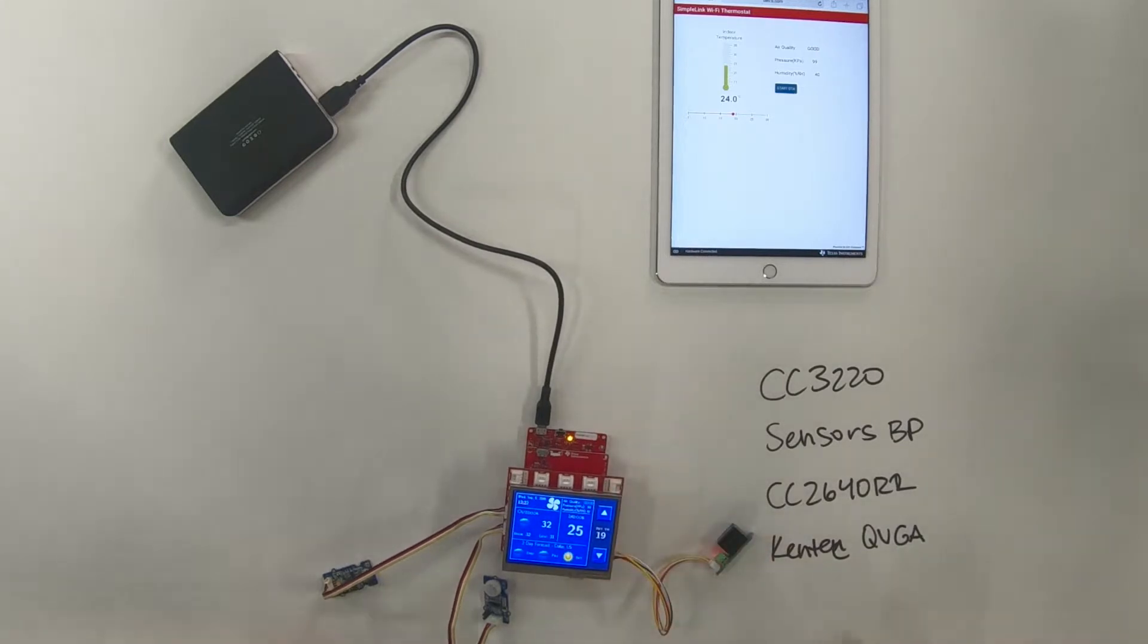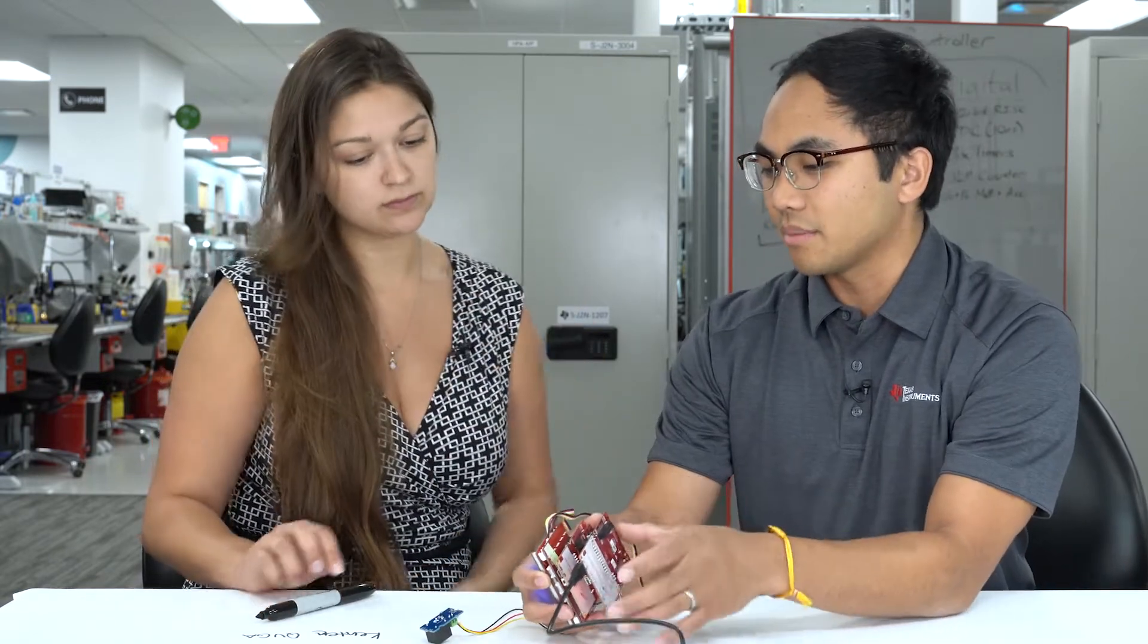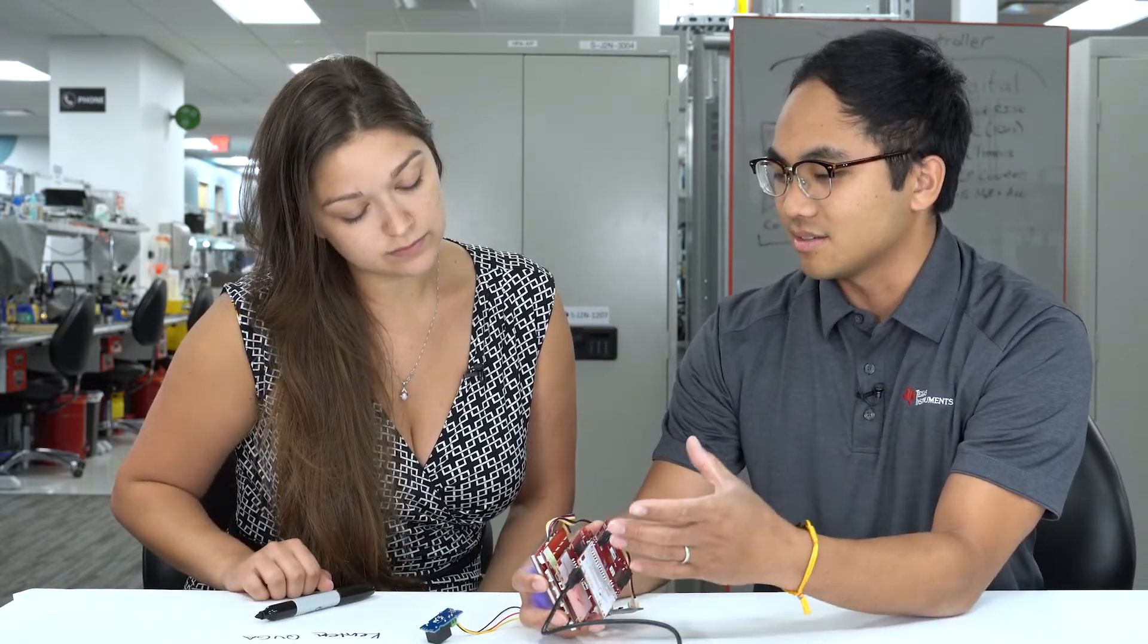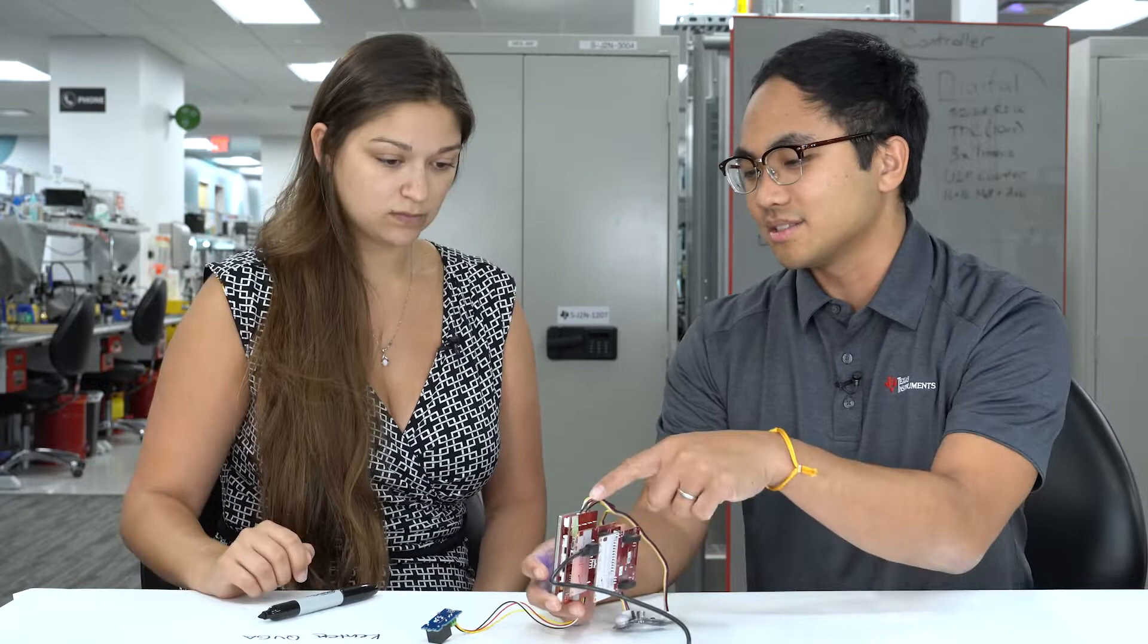Very cool. And I see it's taking kind of a modular approach here. So you've got your primary application processor, the 3220. That's a Wi-Fi plus ARM MCU. And that's kind of handling the majority of the application. And then I guess here is also the BLE part that you're using specifically for BLE provisioning.